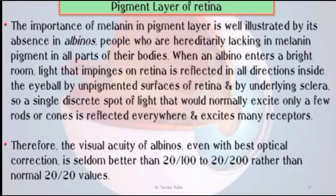The importance of melanin in the pigmented layer is well illustrated by its absence in albinos, who are people hereditarily lacking melanin pigment in all parts of their bodies. When an albino enters a brightly lit room, light that strikes the retina is reflected in all directions inside the eyeball by the unpigmented substance of the retina and underlying sclera. A single discrete spot of light that would normally excite only a few rods or cones is reflected everywhere and excites many receptors. Therefore, visual acuity in albinos, even with the best optical correction, is seldom better than 20/100 or 20/200, rather than the normal 20/20 value.